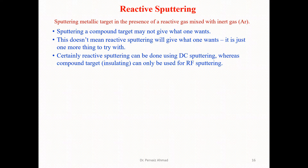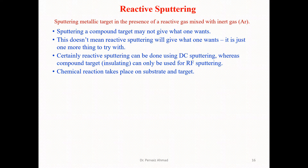Reactive sputtering can be done by using DC sputtering, whereas compound targets — meaning insulating targets — can only be used for RF sputtering. This is a point we have already mentioned while describing the types of sputtering, so let me repeat: reactive sputtering uses DC, insulating targets require RF sputtering.